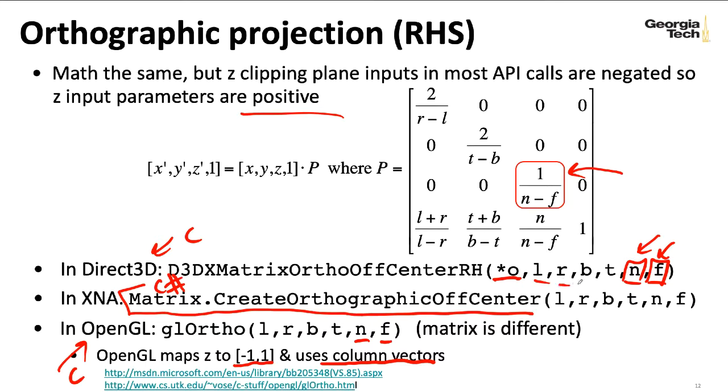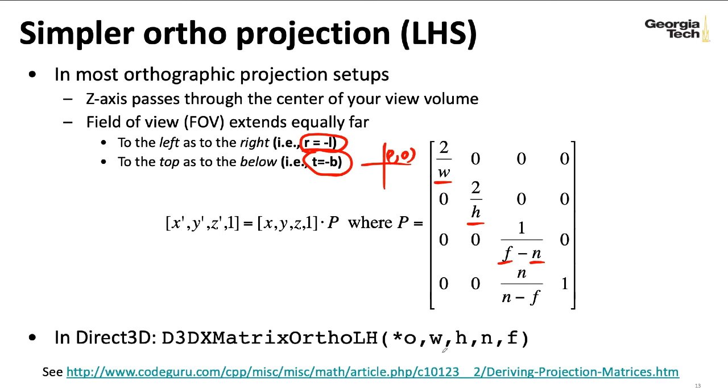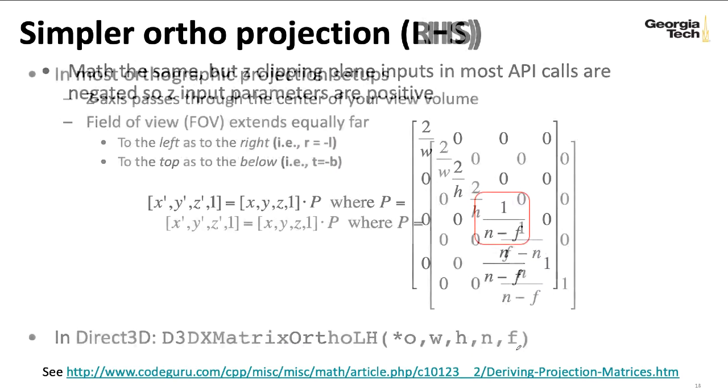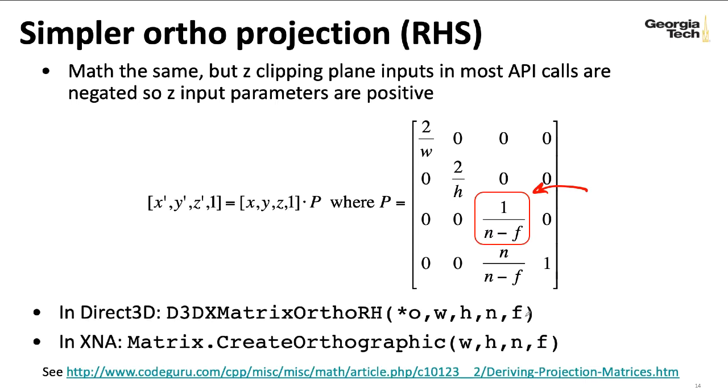It's fairly rarely the case that you need all the flexibility of left, right, bottom, top, et cetera. Usually there's a symmetry where the middle in your X and Y land is at zero, zero, and we'll just define a width and height. We do need to keep the flexibility of different near and far planes. In this case, most APIs will have a specialized version with a shorter name and smaller parameter list. Here's the left-handed version and the right-handed version. Again, they put this minus sign in even though N and F should be negative numbers. The simplified calls expect positive numbers so they do the negation for you.